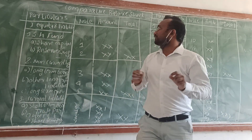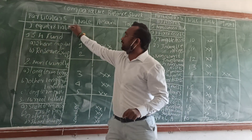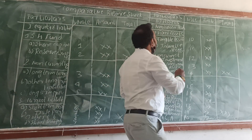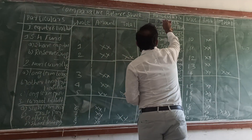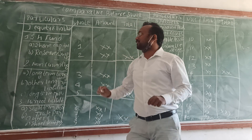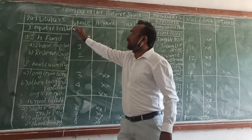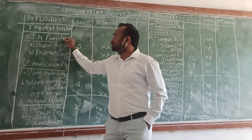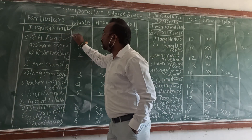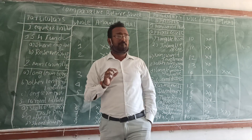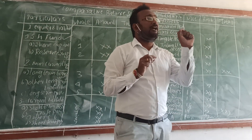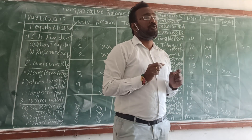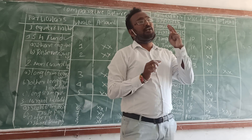Part 1 is called equity and liability. Part 2 is called assets. So let us go through the first part: equity and liability. The first thing is shareholders fund.